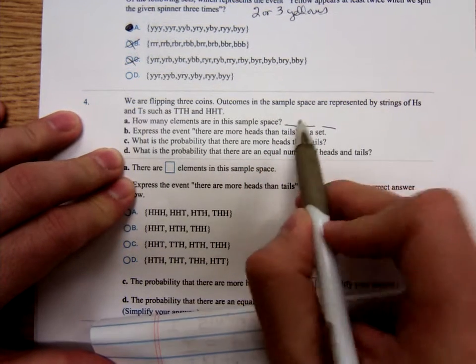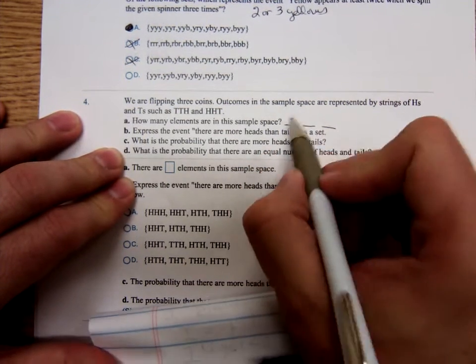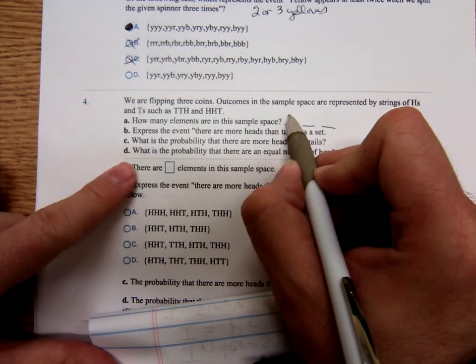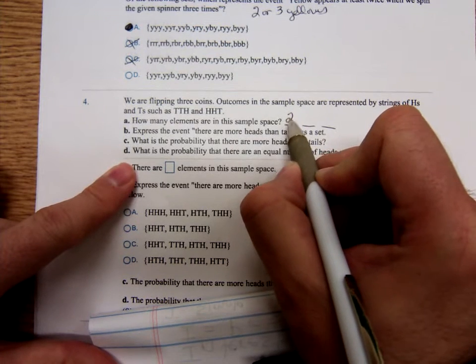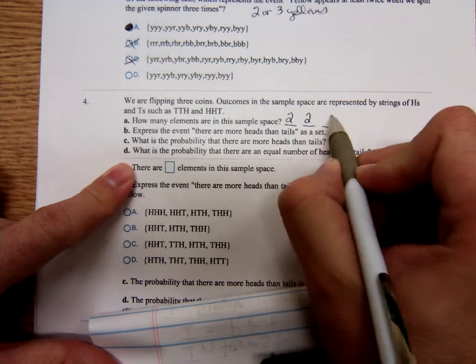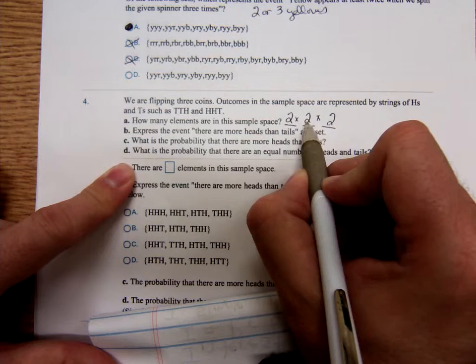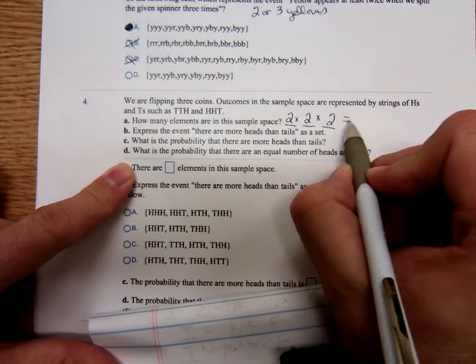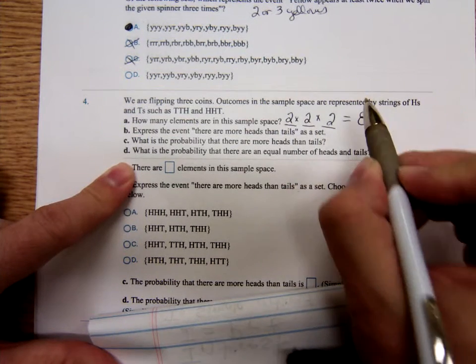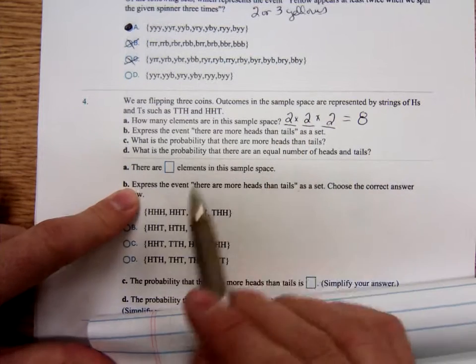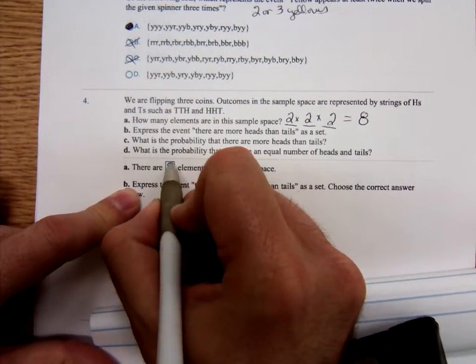You just ask yourself, how many possible outcomes are there for each of them? For each of the coin, there's two possible outcomes, either heads or tails, heads or tails, heads or tails. All together, that means that there are eight possible outcomes.